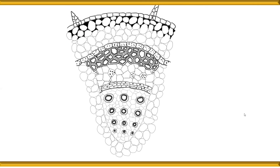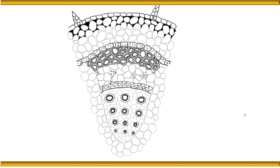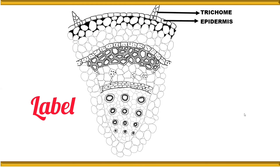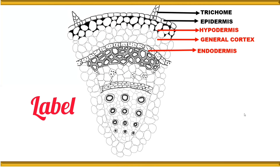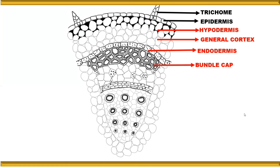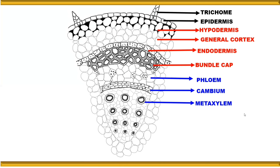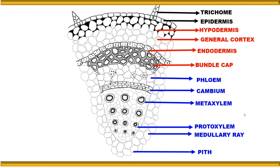The beauty of anatomy diagrams lies in the light and dark shading — pressure of the pencil shows secondary wall thickening or corner thickening. Now add labels: outermost is epidermis, then trichome, hypodermis (collenchymatous), general cortex, endodermis (starch sheath), bundle cap (sclerenchymatous), phloem, cambium, and xylem. The larger vessels are metaxylem and the smaller ones facing the pith are protoxylem. The pith extends as medullary rays. Remember — not only drawing but labeling the anatomical diagram is essential.